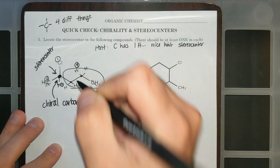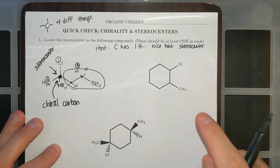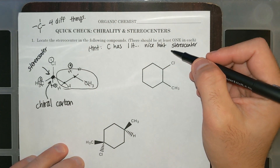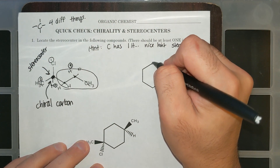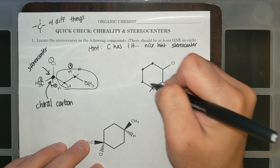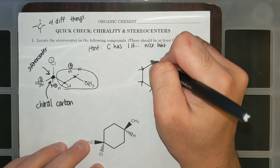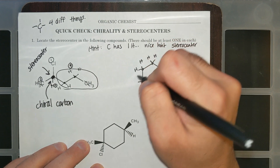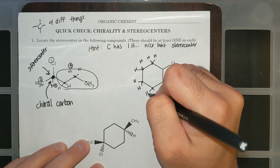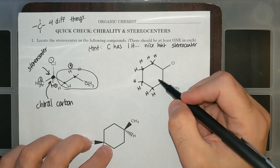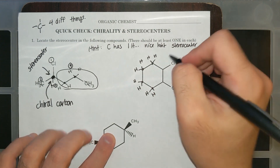This is my chiral carbon — there are four things attached to it. Now let's look at something on the ring. Again, a nice hint is if a carbon has one hydrogen. These four carbons have two hydrogens each — they are not going to be stereocenters. It is not possible to be chiral and have two hydrogens.